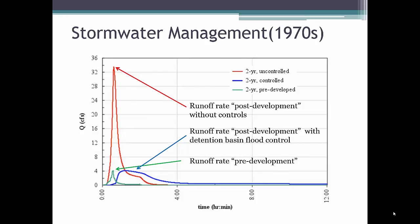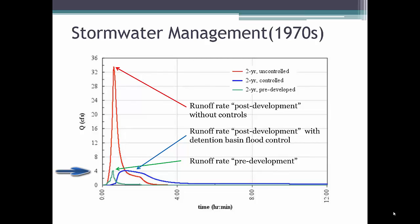This graph shows the results of modeling and designing a typical flood control basin. The objective of flood control design is to limit the rate of runoff to the value that existed prior to development to reduce downstream flooding. In this example, the pre-development peak discharge rate was about 4 CFS, and the post-development peak discharge rate without a flood control basin was about 34 CFS. Using a flood control detention basin reduced the post-development peak discharge rate to the value that existed prior to development.